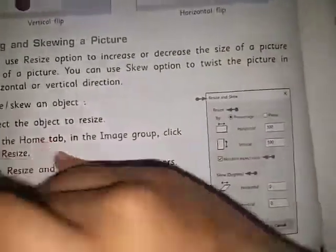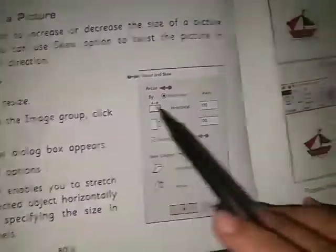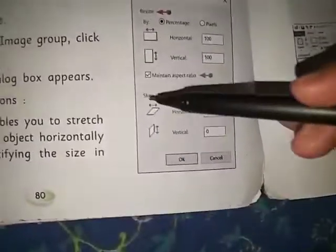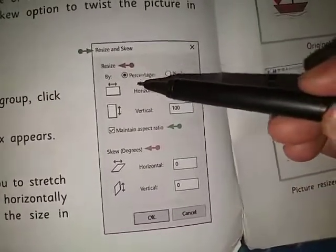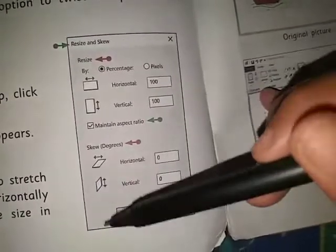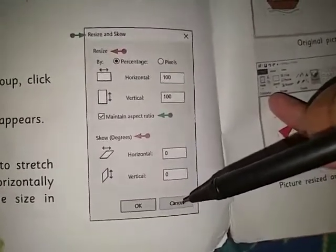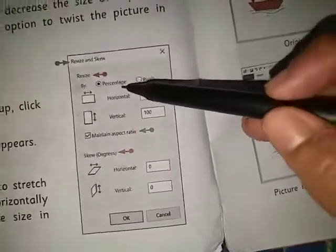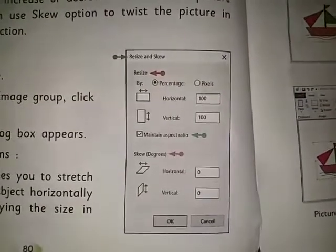Now the dialog box will appear with the following options. The resize option enables you to stretch or shrink the selected object horizontally or vertically by specifying the size in percentage or pixels. Select maintain aspect ratio checkbox to adjust the proportions.